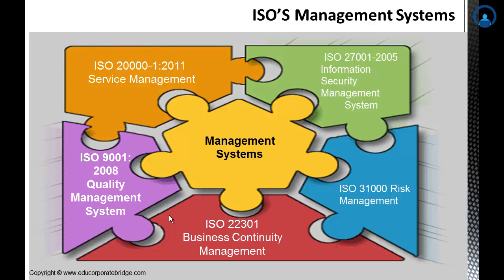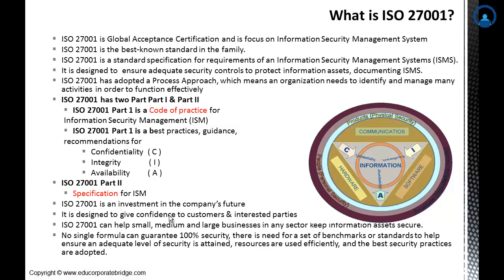Now, what is ISO 27001? ISO 27001 is a globally accepted certification based on ISMS — the Information Security Management System. It is a set of integrated processes that govern the management of security program policies and procedures. It provides managed security services with continuous benefits for implementation in any organization. That is why ISO 27001 is called a global acceptance certification focused on ISMS.